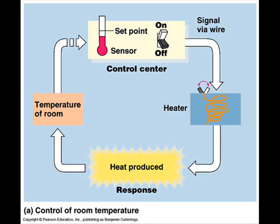A good example of temperature homeostasis is the thermostat example, where a stimulus is detected. Here, the low temperature passes on to the heater. This produces a response where the heaters are turned on, heat is produced, and the temperature of the room increases.